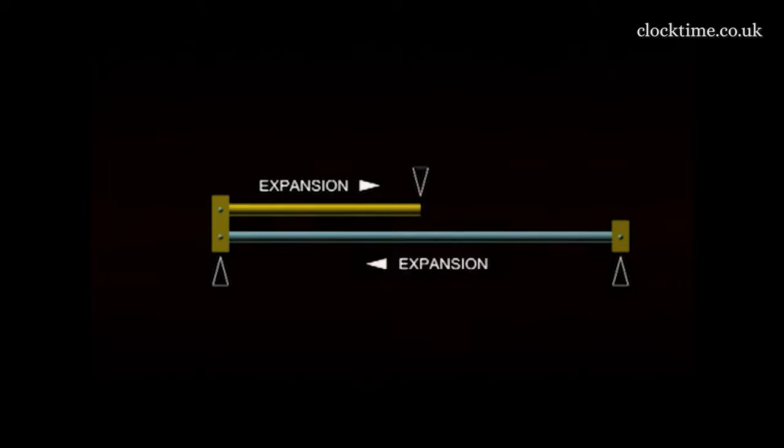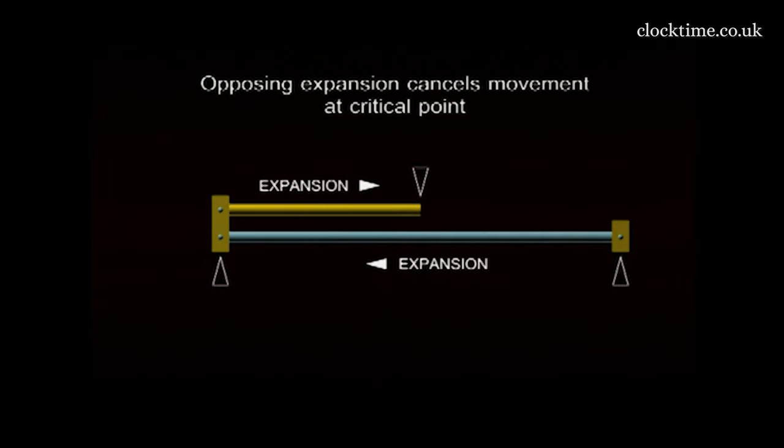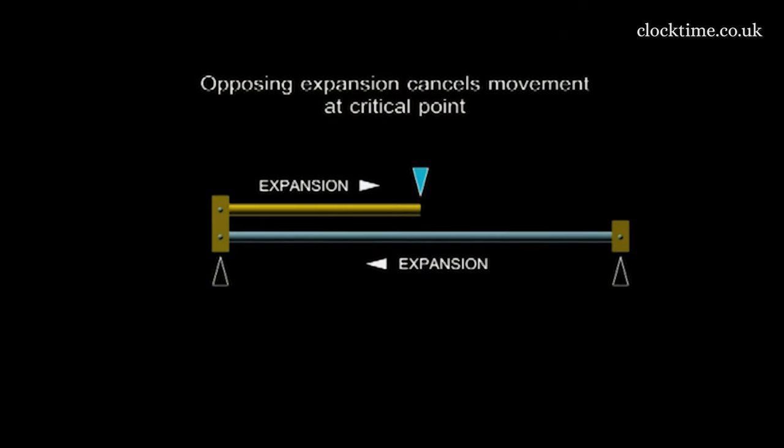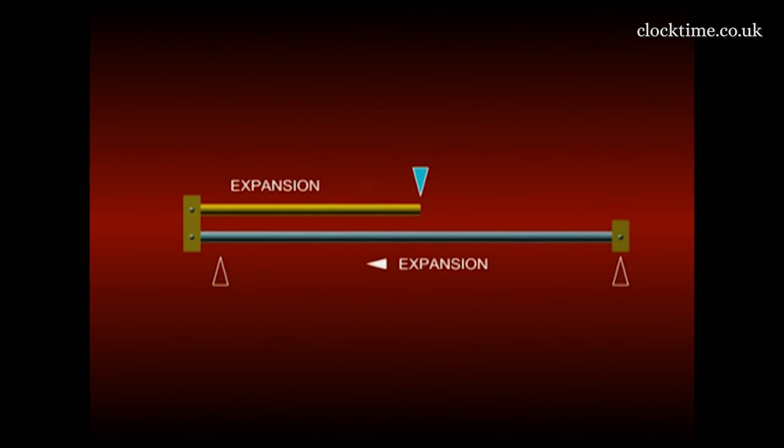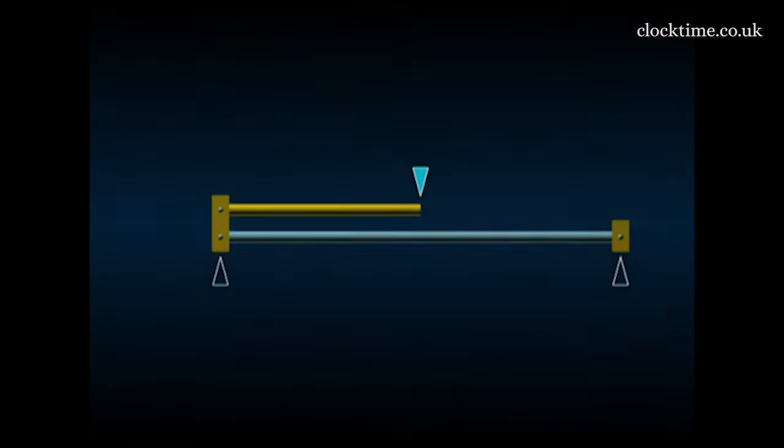By connecting these two rods at a critical point, the expansion could be opposed and the lengthening compensated the one by the other.